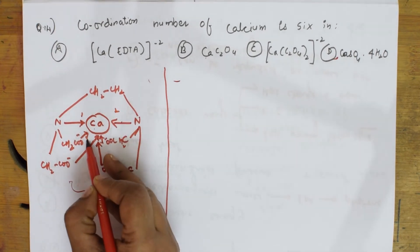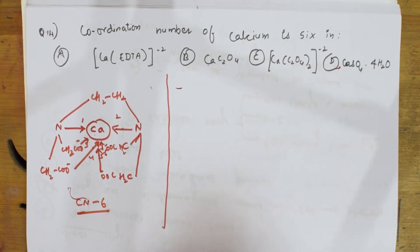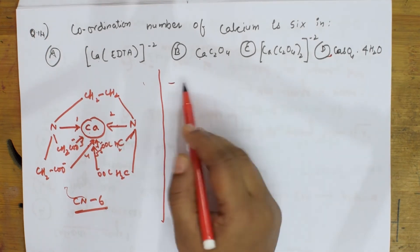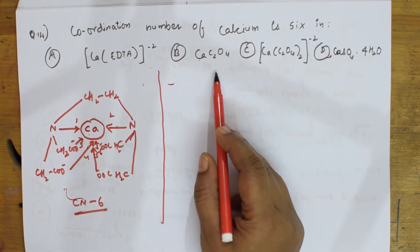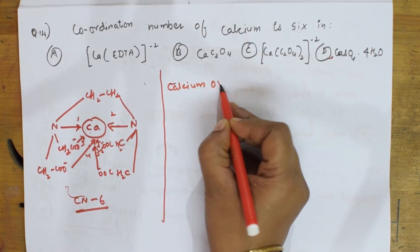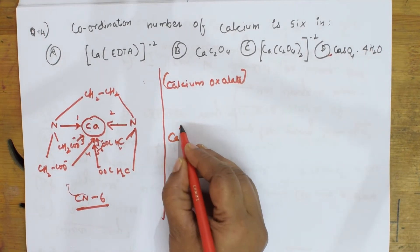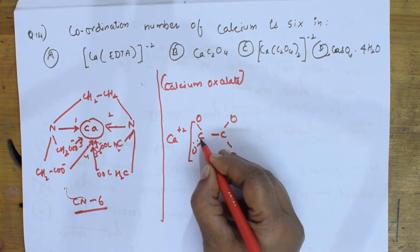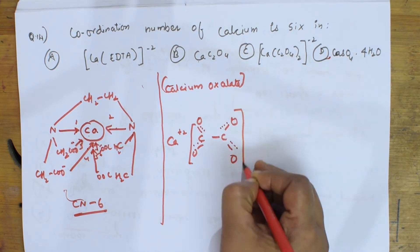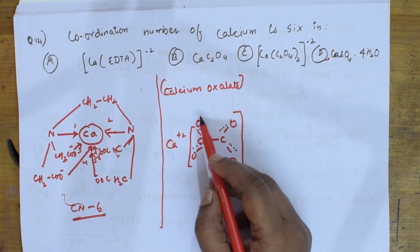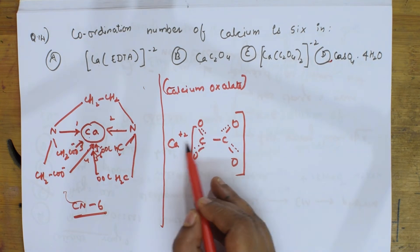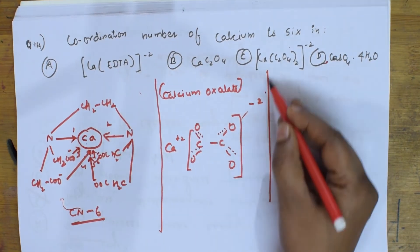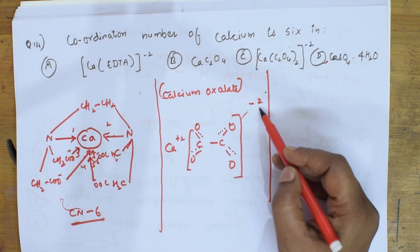So the first option — calcium EDTA with coordination number six is confirmed. Now let's check calcium oxalate. Calcium is Ca²⁺, oxalate has oxygens coordinated. Drawing the structure: how many are surrounding here? Four — only four oxygens are linked to this calcium. So coordination number is not six here. For calcium sulphate with 4H₂O: calcium in the centre, four water molecules each contributing one oxygen, and sulphate also coordinated through hydrogen bonding. Counting: one, two, three, four — coordination number is four here.